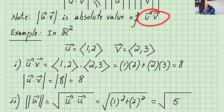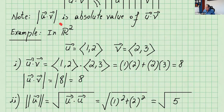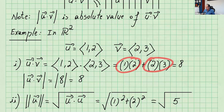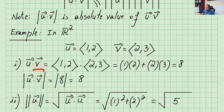Let's first check this in R2 with a simple example. I picked this vector with components 1, 2, and then v is 2, 3. U dot v — we can write it like that — just multiply the corresponding components and add them. It's 8. Absolute value of u dot v is absolute value of 8, which is just 8.